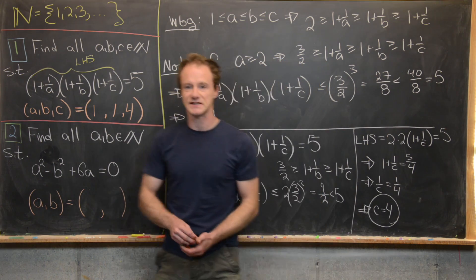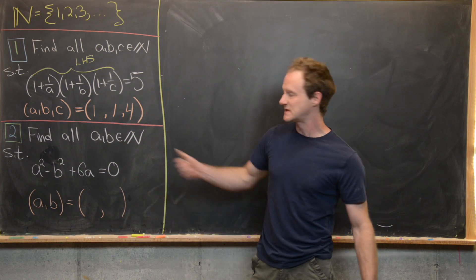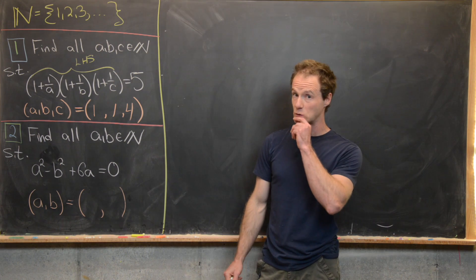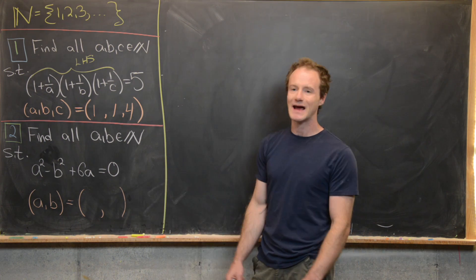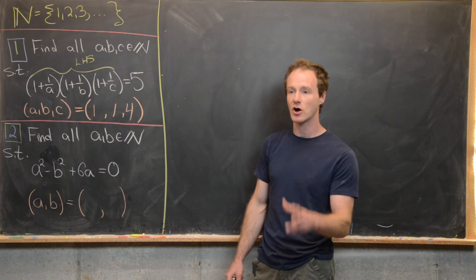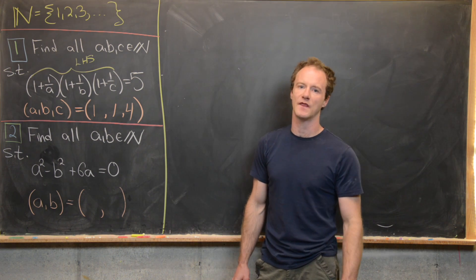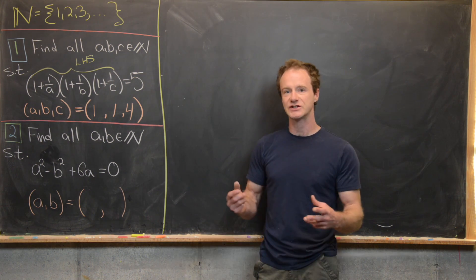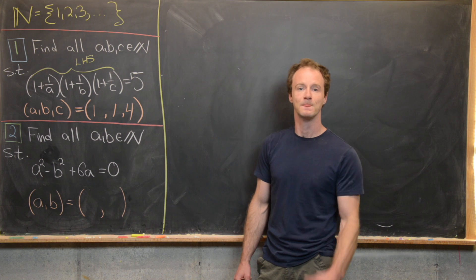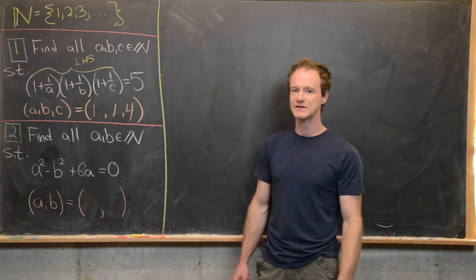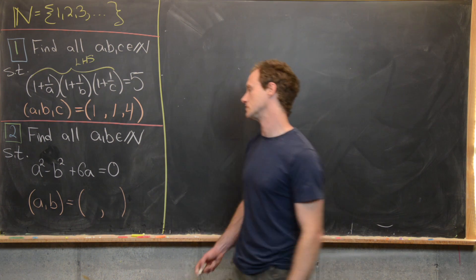Now let's look at the second problem. My hint here is to complete part of the square on the left-hand side, and then turn this into a factorization type problem. So give this problem a go with that hint, and now we're going to launch into the solution.